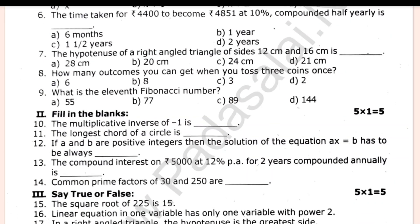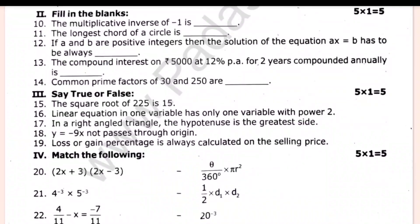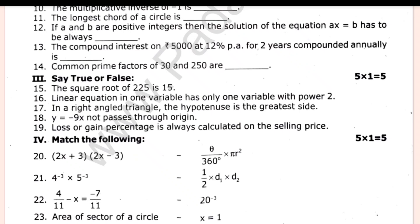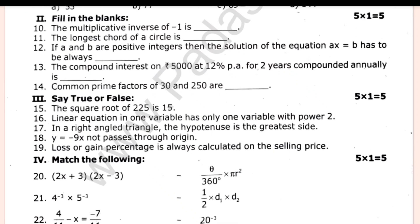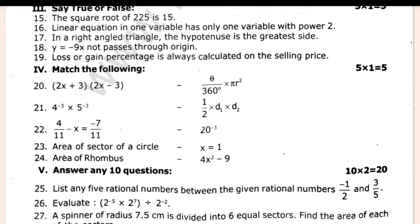And the next one is true or false. You can send 5 and 5. And the next Roman is match the following. That is 5 marks. The next one is 2 marks section. Answer any 10 questions.